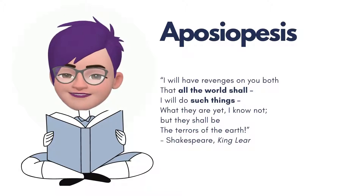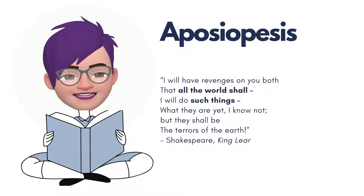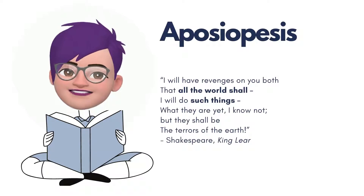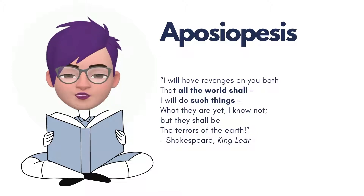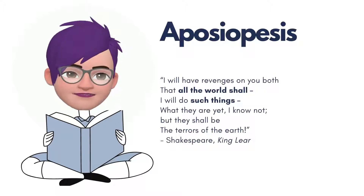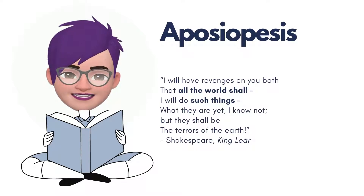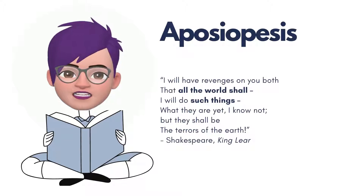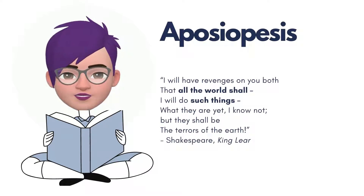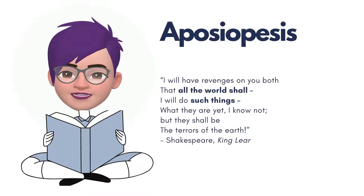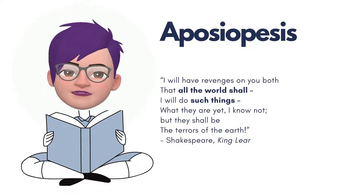Aposiopesis. Now this seems like a tongue twister and is definitely a mouthful, but it's actually quite simple. It is a rhetorical device in which the speaker or writer abruptly breaks off and leaves the statement incomplete, as if they are not willing to state what is in their mind because they are overcome by passion, excitement, or fear. This allows the ending to be filled in by the listener's imagination. To show this in a sentence, one may use the em dash or the ellipsis. While it is most often used in prose and dialogue writing, it lends itself very well to contemporary poetry. We use this in everyday life too — we say 'don't go there or else...' or we say 'how could you?' and leave it at that. Let's take a look at some examples from literature.